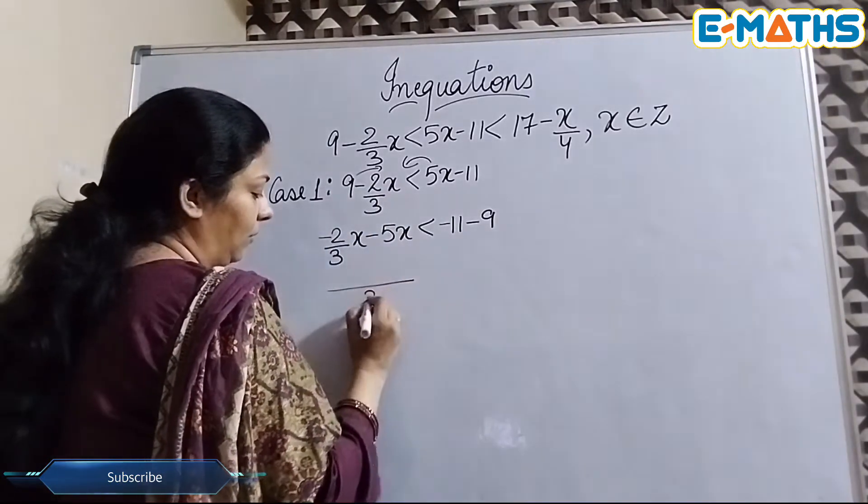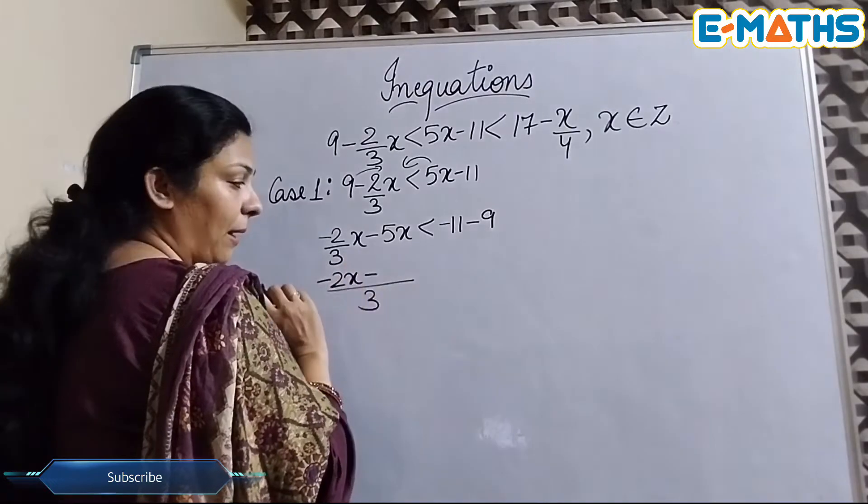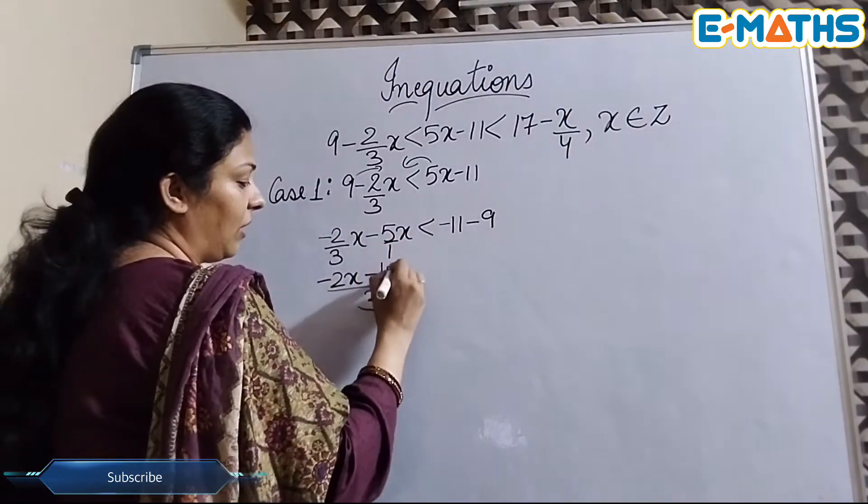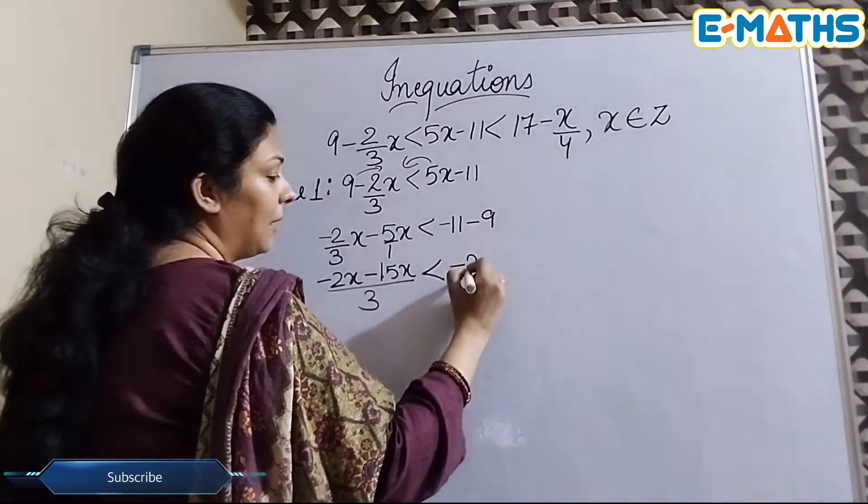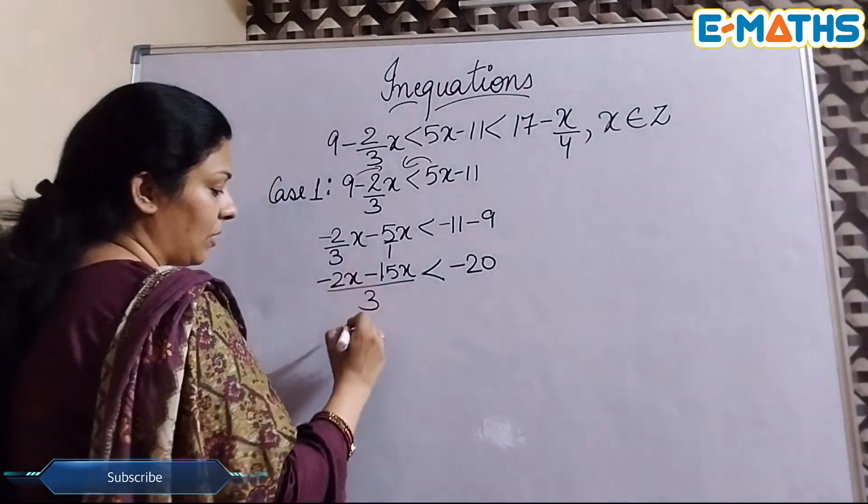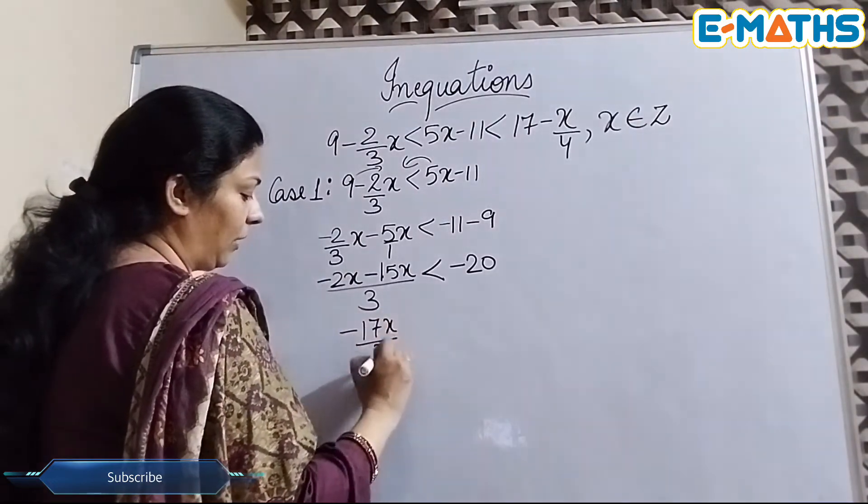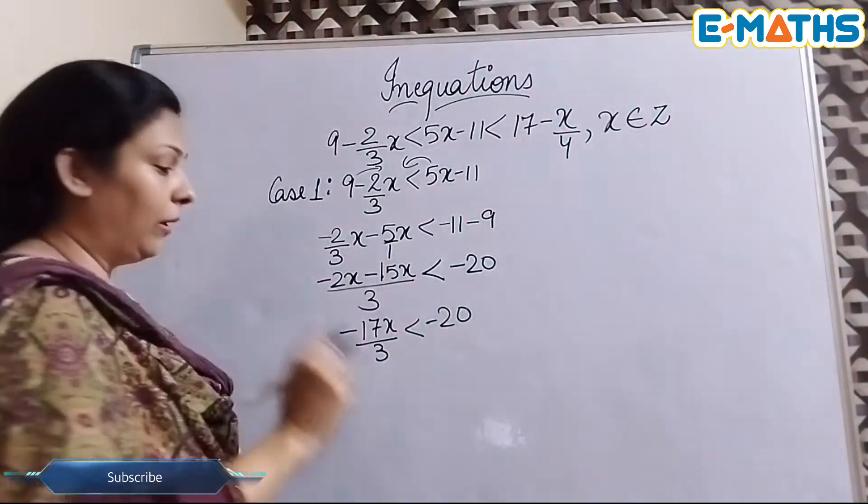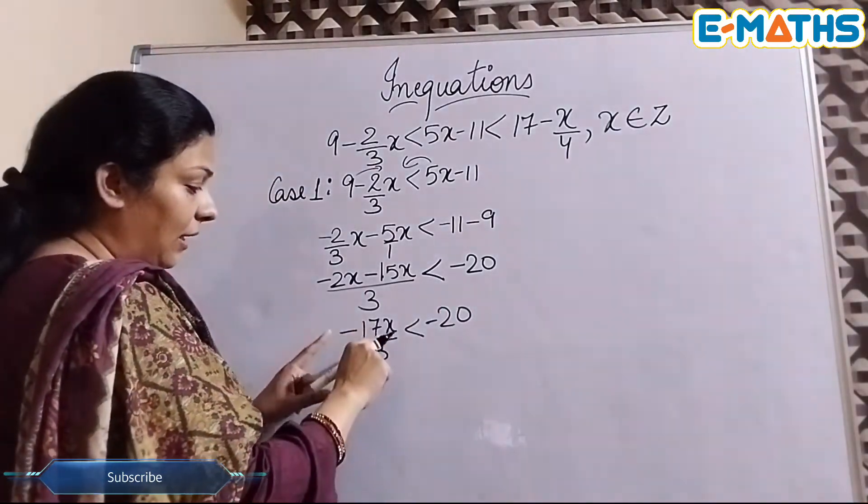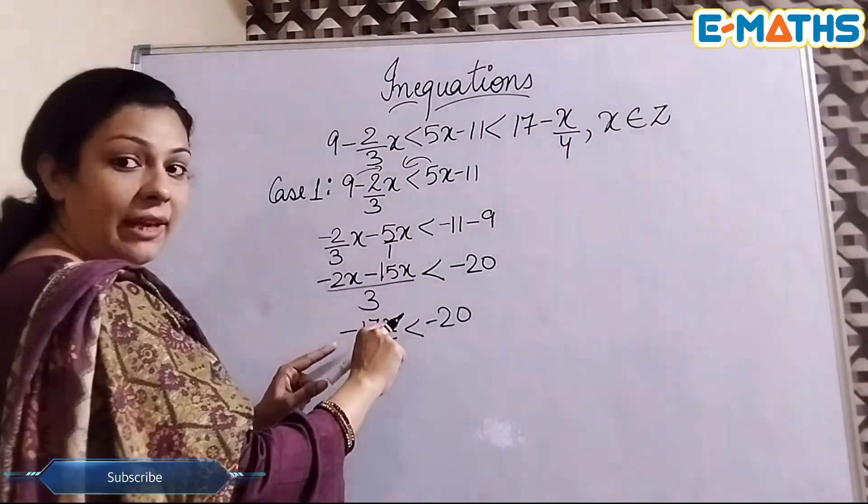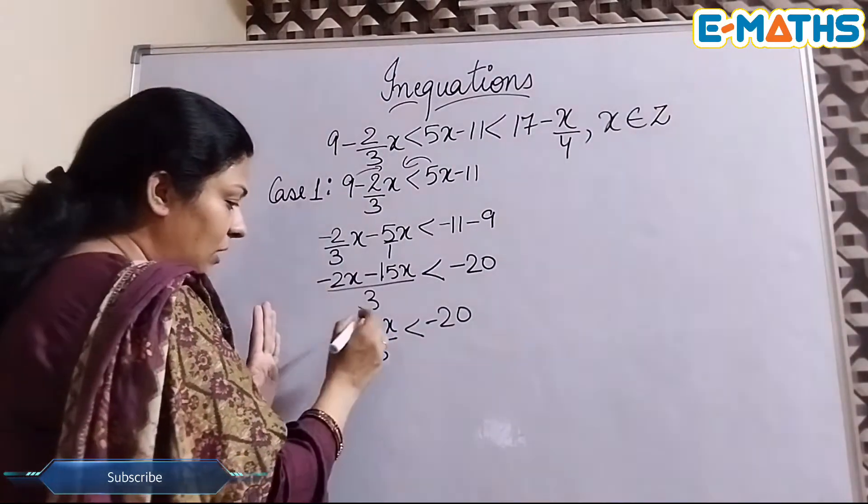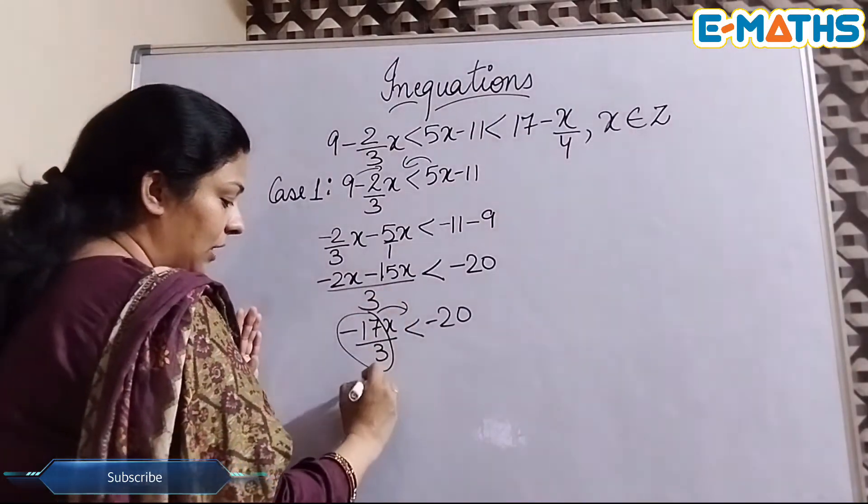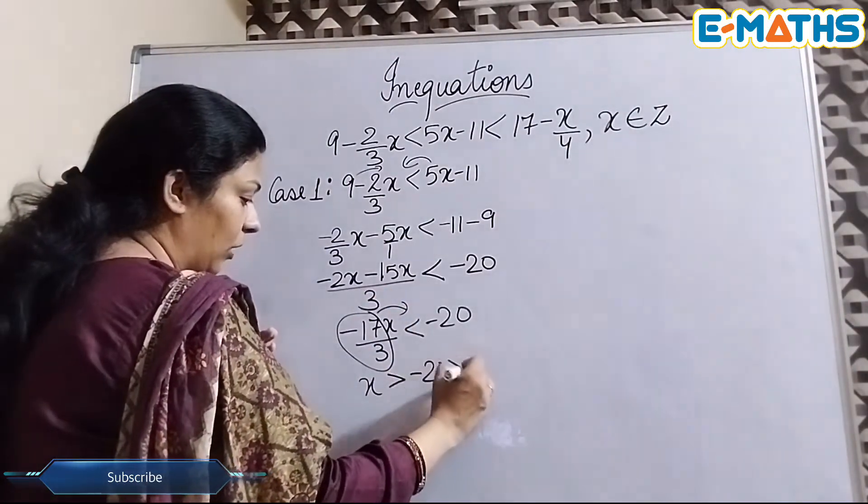Now we'll solve this. We'll take the LCM here. This -2x will remain, sign minus will be there. If it is nothing, that means 1. 3 times 5x is 15, so 15x smaller than -20. This will be -17x/3 < -20. Now here this -17/3 is in multiplication with x. So when I'm going to transpose this entire term, when this will be transposed here, this will change the sign of inequality.